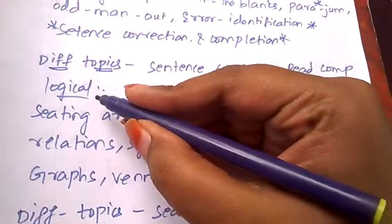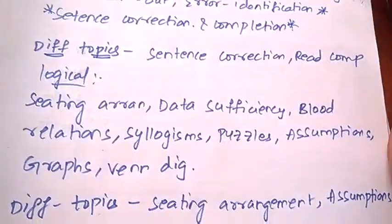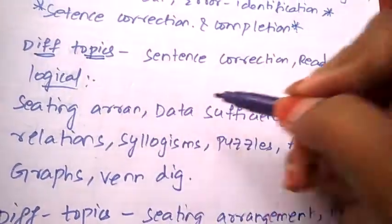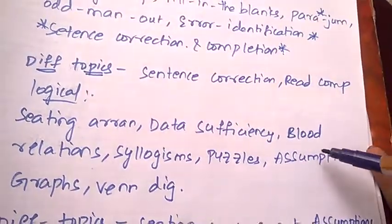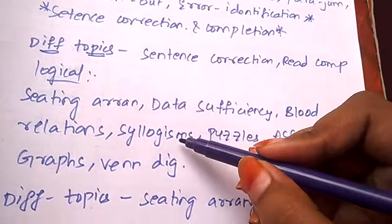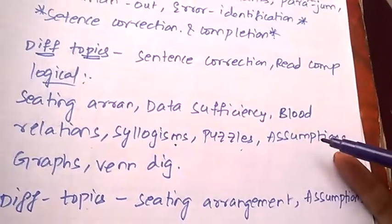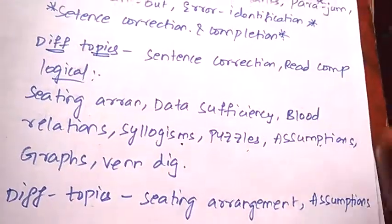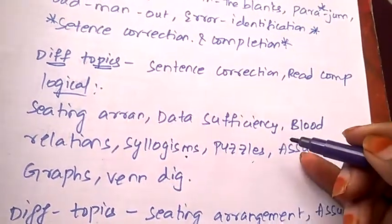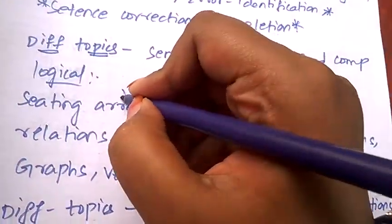Now let's see the topics which are very important for logical: seating arrangement, data sufficiency, blood relations, syllogisms, puzzles, assumptions, graphs, and Venn diagrams. The topics you need to concentrate more are seating arrangements, data sufficiency, and puzzles. Practice these three more because they'll be a bit confusing.